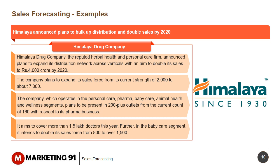Further, in the baby care segment, Himalaya intends to double its sales force from 800 to over 1500.